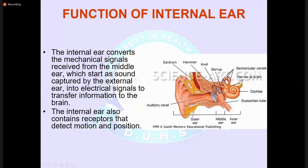The internal ear converts mechanical signals received from the middle ear — which starts with sound captured by the external ear — into electrical signals and transmits this information to the brain. The internal ear also contains receptors that detect motion and position.